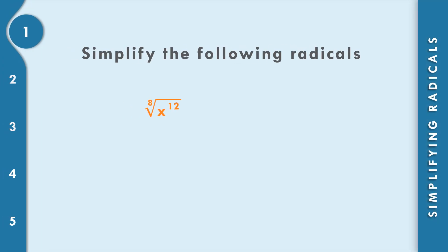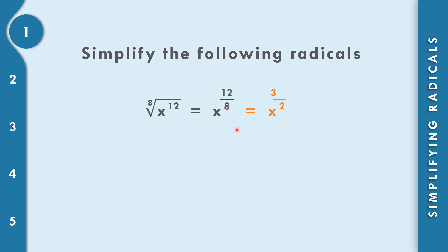Let us apply this in example number 1: the 8th root of x to the 12th power. We copy the base x and write the exponent 12 over the index 8. To get the lowest term of 12 over 8, we divide both by 4: 12 divided by 4 is 3, and 8 divided by 4 is 2. So we get x to the 3 over 2.